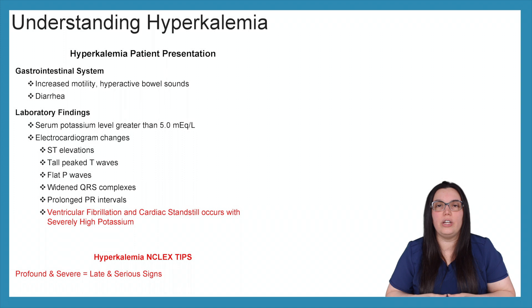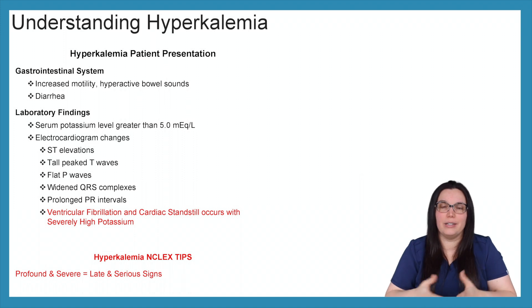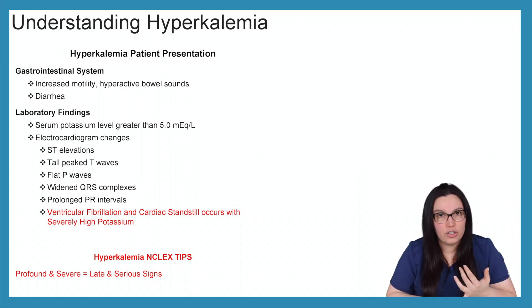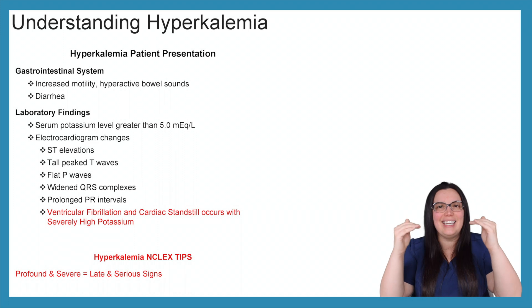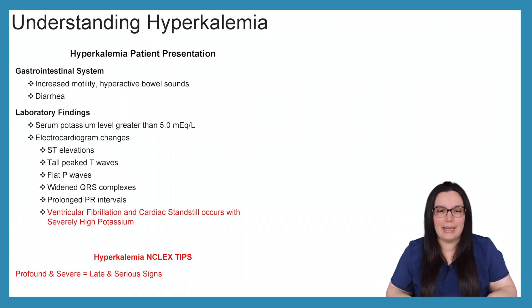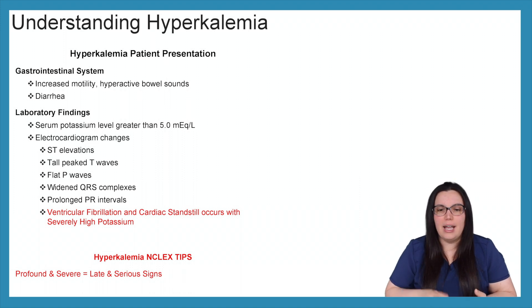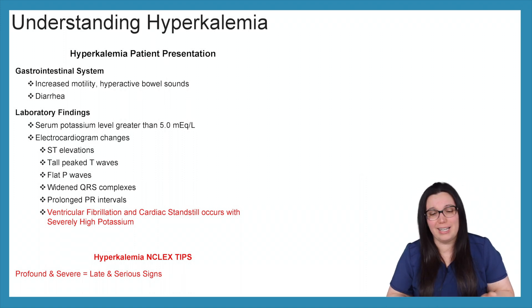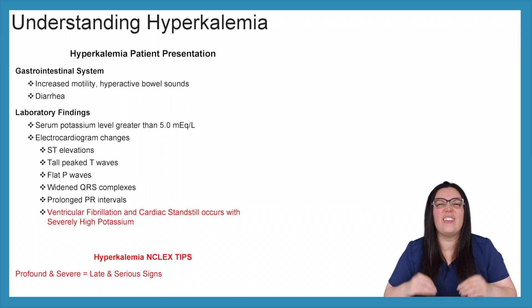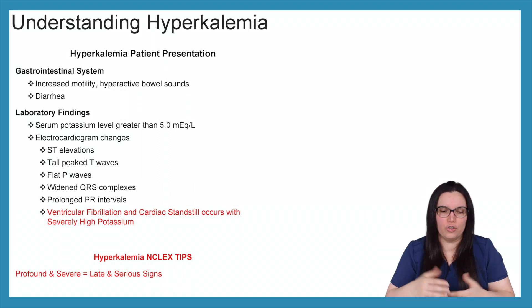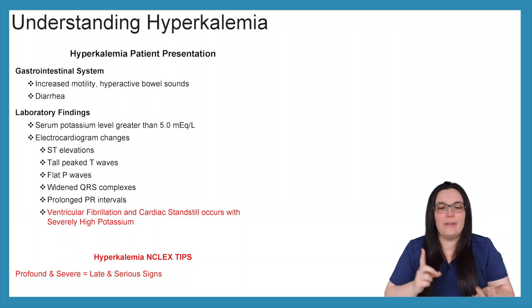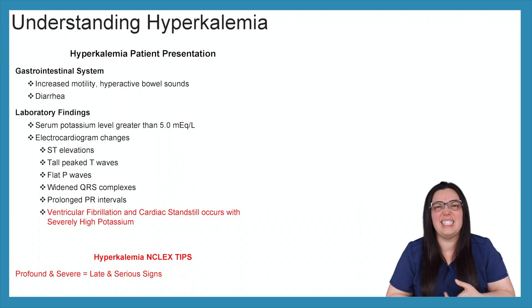When it comes to electrocardiogram changes, remember everything is tight and contracted, so our ECG is going to be hyperactive. You're going to see ST elevations, tall peaked T waves, flat P waves, widened QRS complexes, and prolonged PR intervals. You can also see ventricular fibrillation or cardiac standstill — also known as asystole — if severely elevated potassium levels aren't being treated. On your NCLEX, when you hear 'profound' and 'severe,' these are late and serious signs.